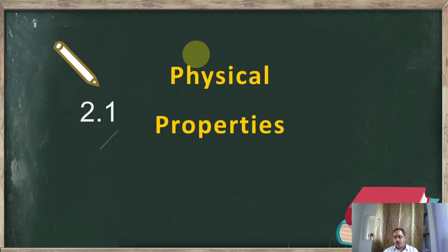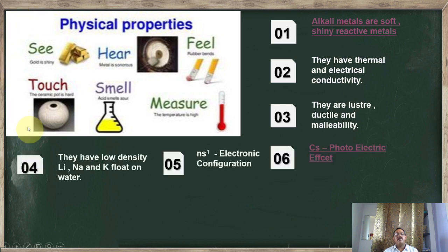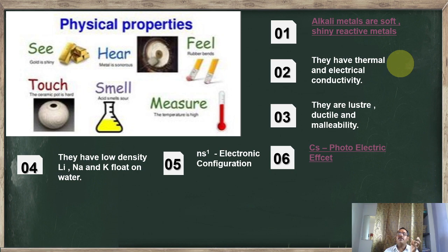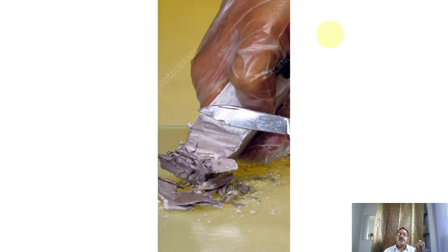Now we will see physical properties — what we can see, hear, feel, taste, smell, or measure. Physical property number one: alkali metals are soft, shiny, and reactive metals. We have seen that sodium and potassium are very soft; they can be cut with a knife, just like cutting bread.